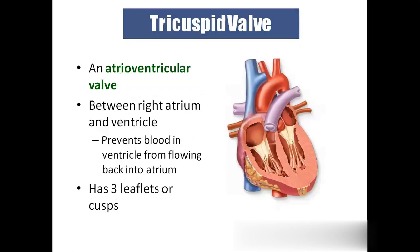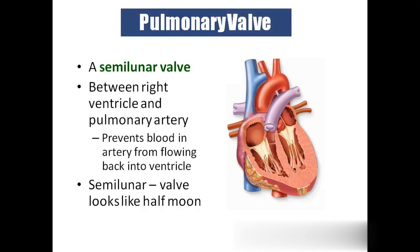The first one is the tricuspid valve, present on the right side. We have three leaf-like structures, that's why we call it tricuspid. This is the chordae tendinae and these are the papillary muscles. On the right side we have three papillary muscles, which actually prevent the backward flow of blood from the ventricles to the atrium.